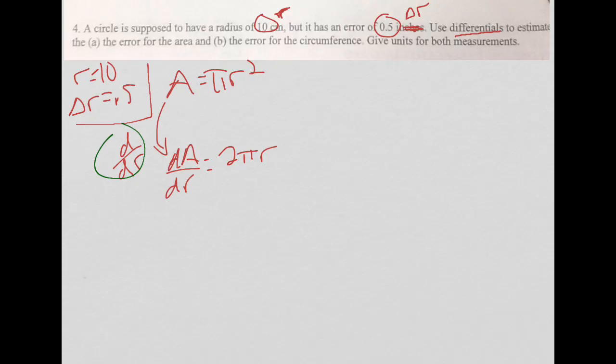Now I change my D's over to delta, so I get delta A, and I'm going to multiply by the DR. So if I multiply by it on this side and this side, then it cancels here, and it will show up there. So I get delta A equals 2 pi R delta R.